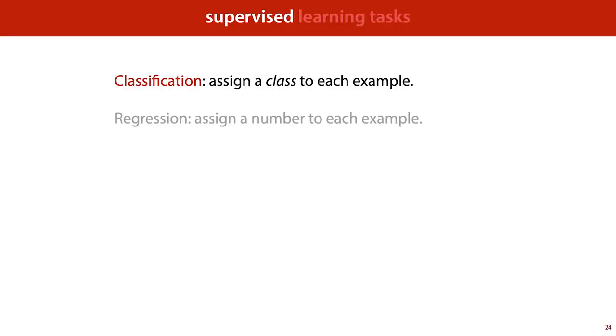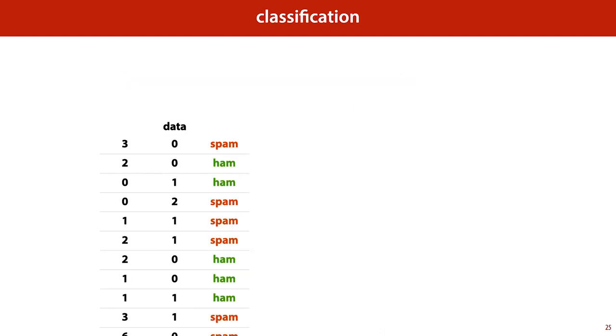Classification is the task of assigning a class to an example. That is, one of a finite number of categories. This is the basic framework of classification. The data that we provide our system with consists of examples, which we call instances, of the things which we are trying to learn something about. In this example, our instances are emails.